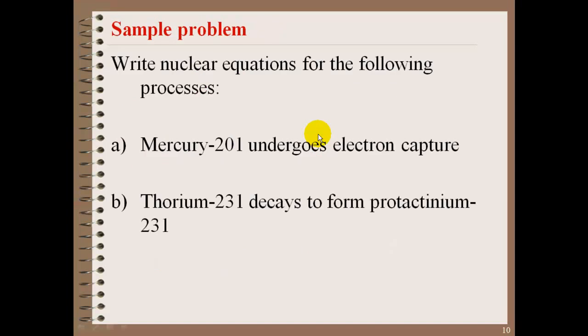Some sample problems here. Write the nuclear equations for the following processes. Mercury-201 undergoes electron capture. In this instance, you're going to have mercury, which is Hg, and this will be 201. Mercury's number is 80. It goes through electron capture. So this indicates that this will be a reactant. And what happens is you get 201. The mass doesn't change, but 80 minus 1 is 79, which ends up being gold, Au.